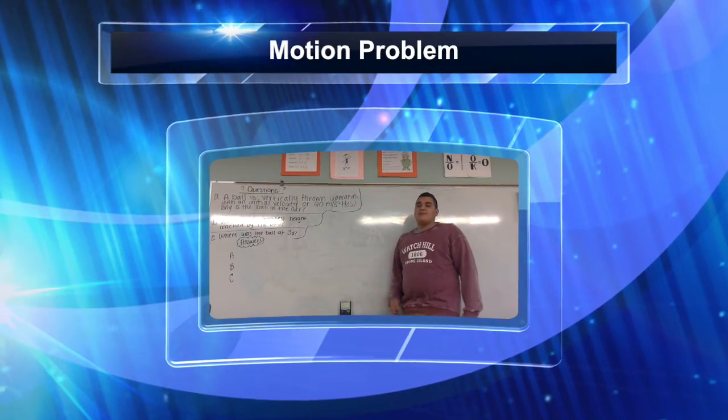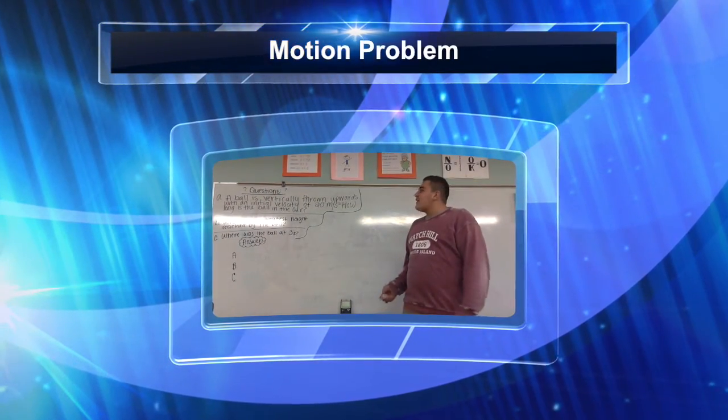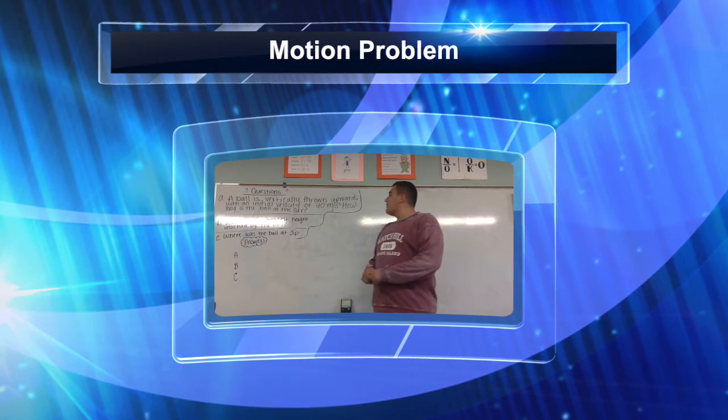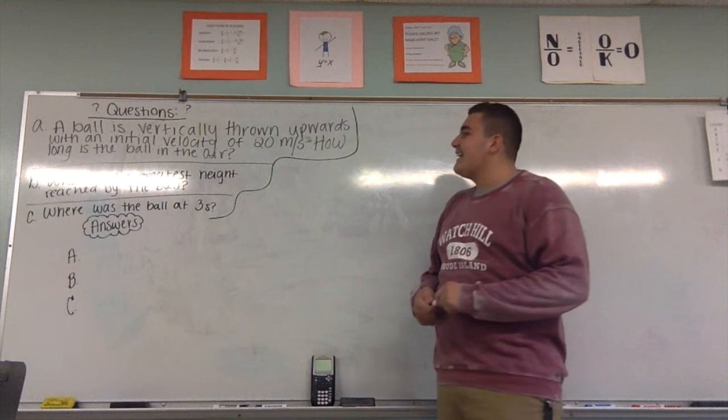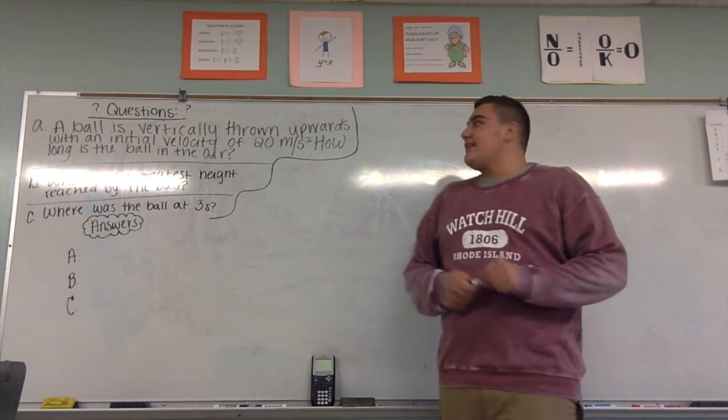I'm Alex Conroy and today we'll be doing a motion problem. Our question is, a ball is vertically thrown upwards with an initial velocity of 20 meters per second. How long is the ball in the air?